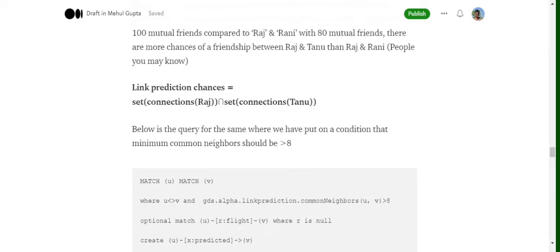The metric that has been calculated is using the set of connections of Raj intersection set of connections of Tanu. So all the friends of Raj and all the friends of Tanu, the intersection, the common set of friends between them. The future edge depends upon their count. So if the higher number of common friends, the higher the chances that they become friends also.